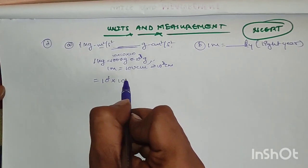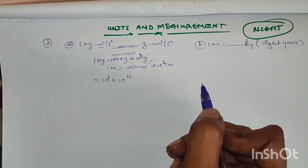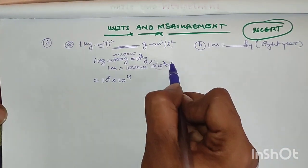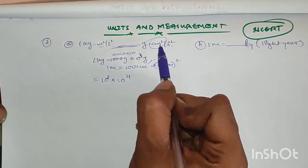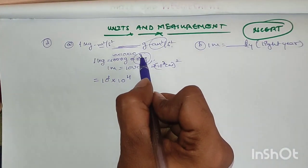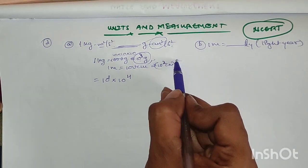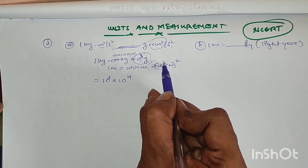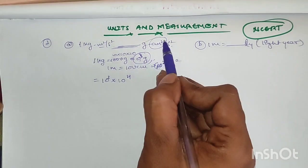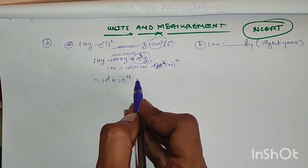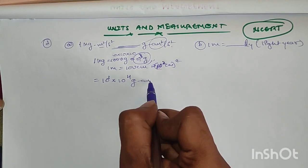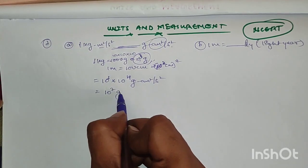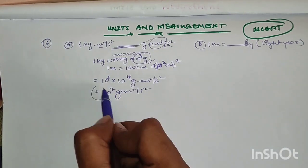So we get 10³ into 10⁴, because the meter term is squared, giving 10 to the power 4. This is 10³ grams into 10² centimeters squared. We get 10 to the power of 4 plus 3, which is 10 to the power of 7 gram·centimeter²·per·second².